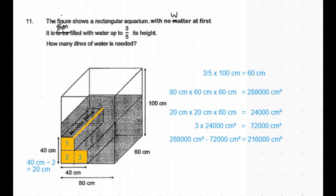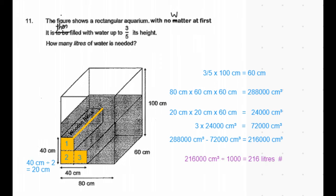Now the answer is asked in terms of liters of water. So let's convert centimeter cube into liters. 1,000 centimeter cube is equal to one liter. So 216,000 centimeter cube divided by thousand is equal to 216 liters.